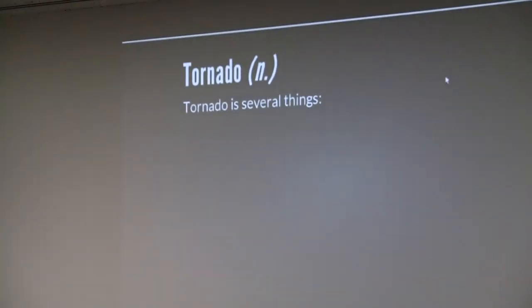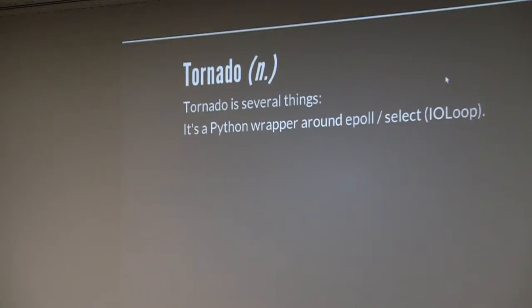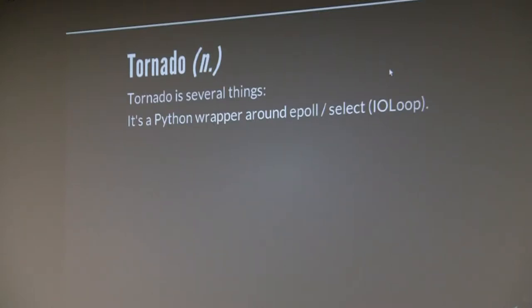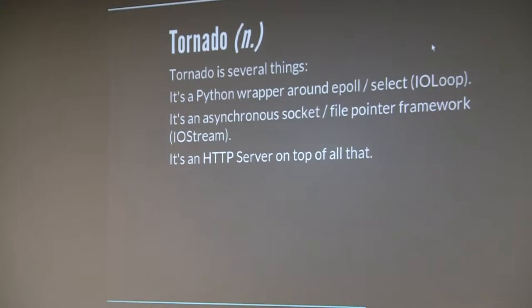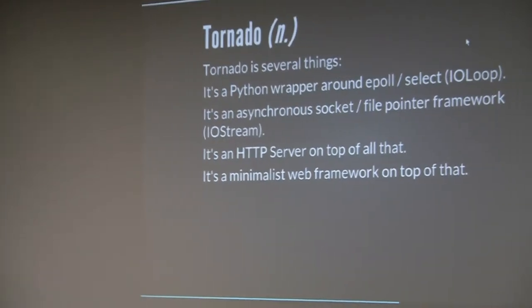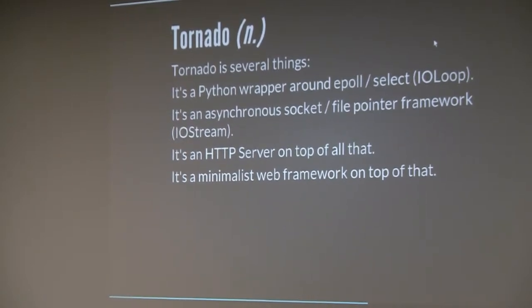On to the Python part of tonight: Tornado is a library that does several things. First, it's a Python wrapper around epoll and select — just an event loop. On top of that you have IOStream, which works with file descriptors or sockets and gives you a flexible asynchronous interface. On top of that, you have an actual HTTP 1.1 server — a full-on server. And on top of that, you have a minimalist web framework. I'm mostly talking about that top stack.